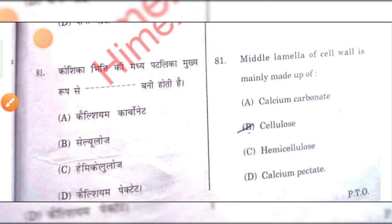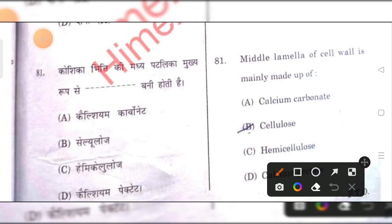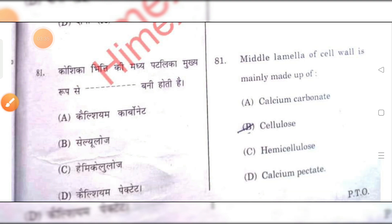The middle lamella of the cell wall is mainly made up of calcium pectate. D is the right answer.